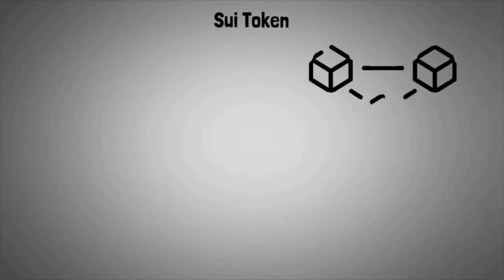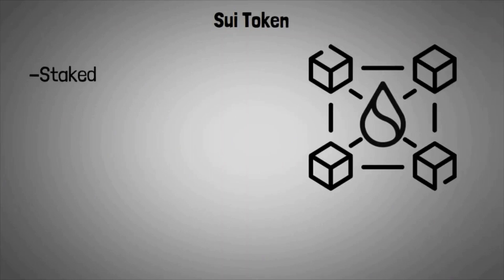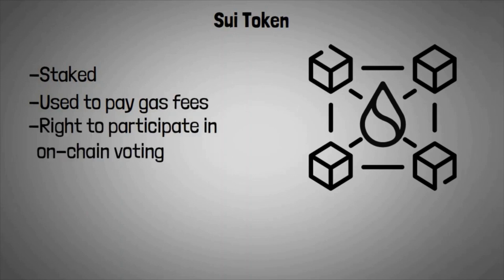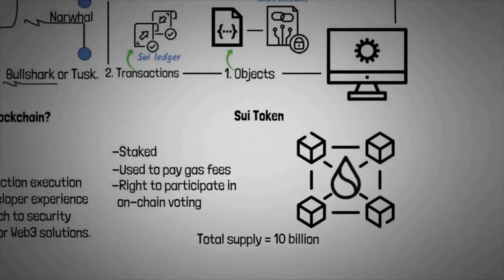Now let's look into the Sway token. The SUI token is the Sway blockchain's native asset. The token can be staked to take part in the proof-of-stake consensus, can be used to pay gas fees when carrying out transactions and other operations, and also gives its holder the right to participate in on-chain voting. The total supply of the token is capped at 10 billion.